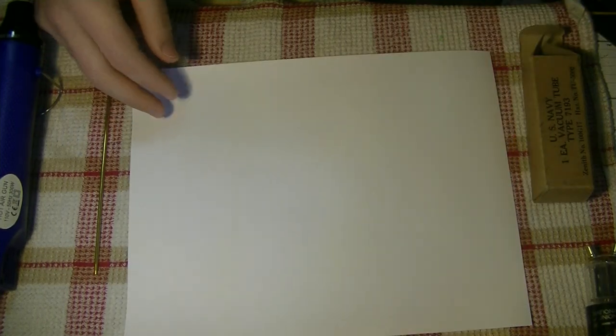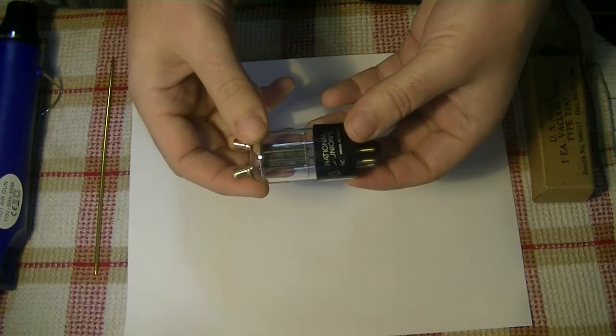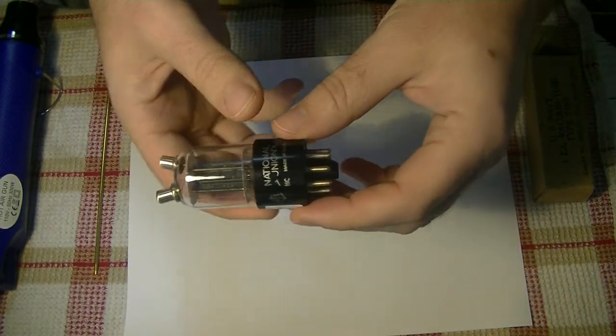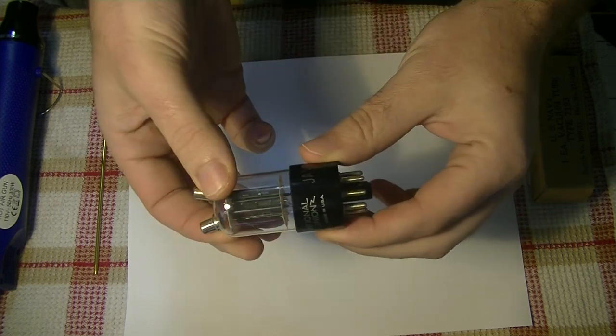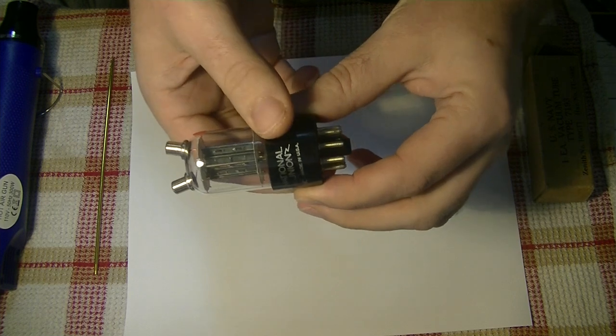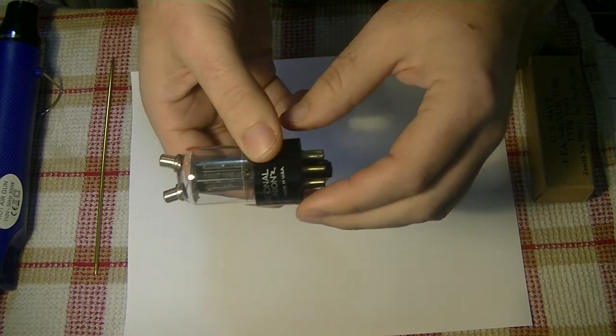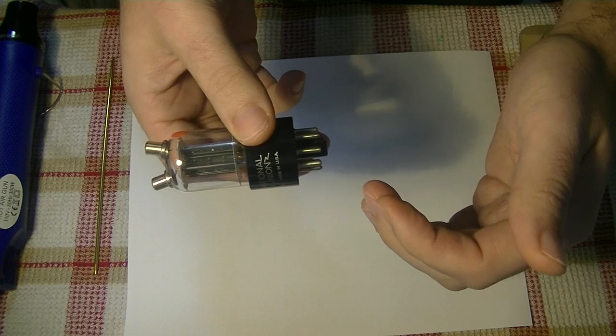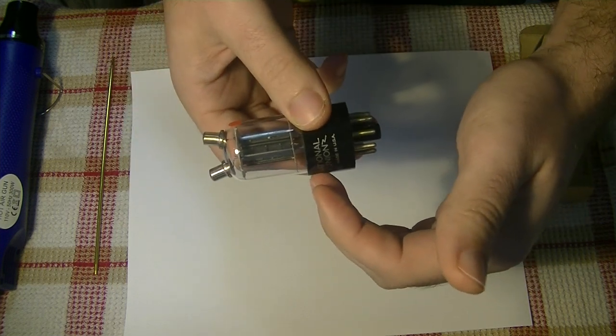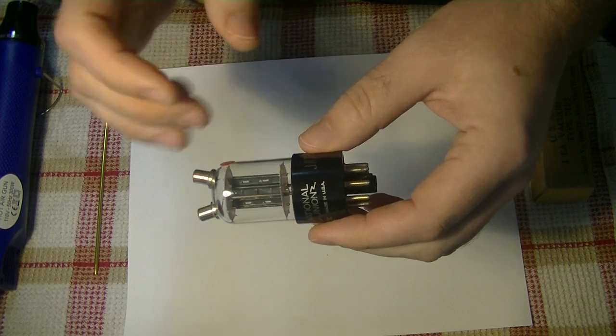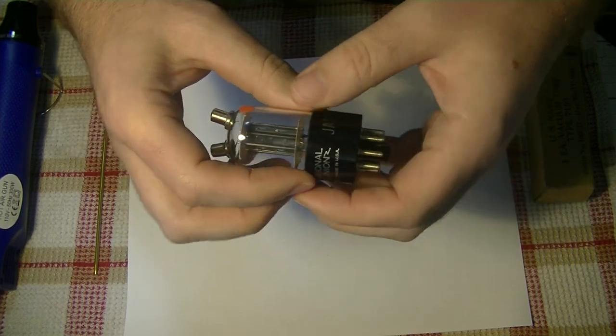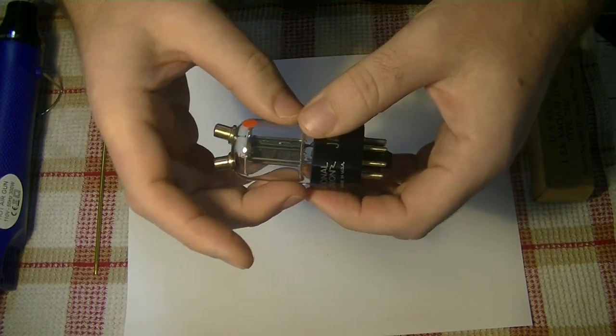So best practice, whenever you're installing or removing a tube, is to insert it and remove it by grasping the base and not the glass. Unfortunately, some manufacturers put their bases down below the level of the tops of their amplifiers, they're inset. And that means that whenever you're trying to grasp the base, there's nothing there to grasp. You have to grab the glass.